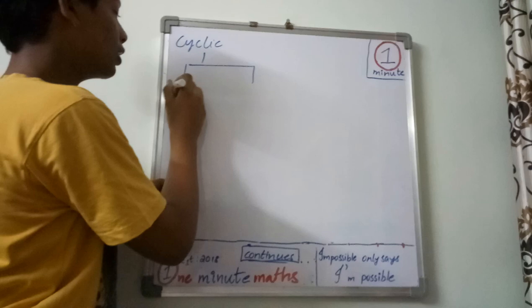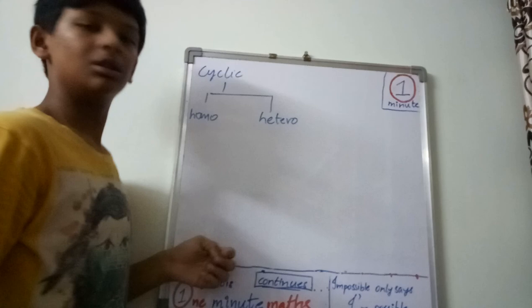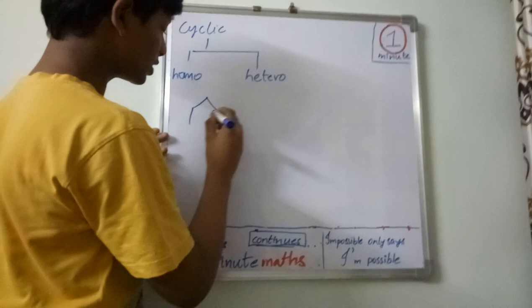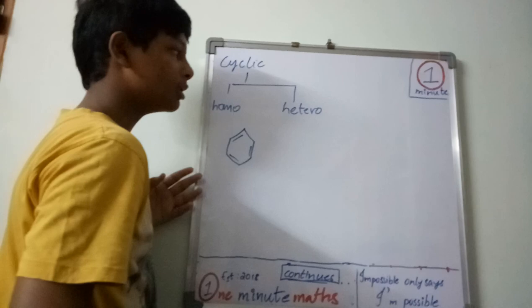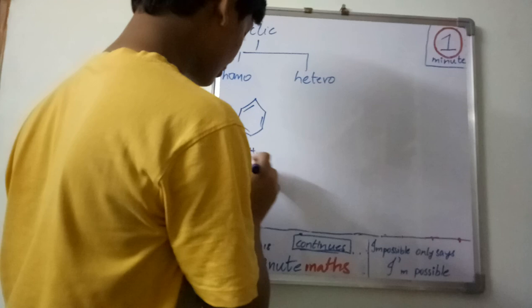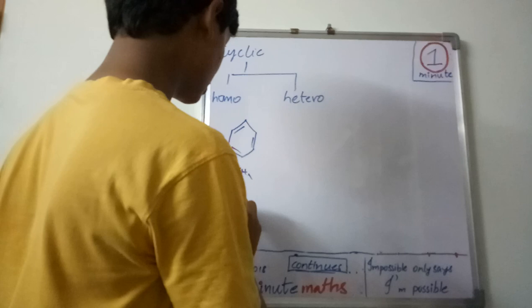You have cyclic of two types: homo and hetero. Just very simple topic. Homocyclic means compounds like benzene - it has no other compounds. Really, if you want to draw structure, all will be like this.